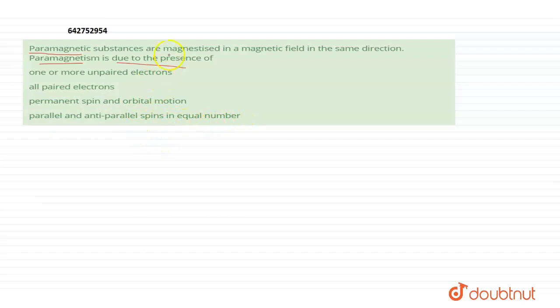So to solve this question, first of all we should know what are paramagnetic substances. Paramagnetic substances are the substances that have one or more unpaired electrons. So I am writing it: paramagnetic substances have one or more unpaired electrons.